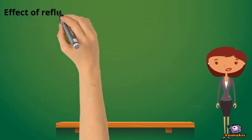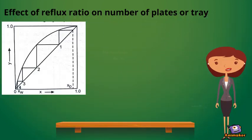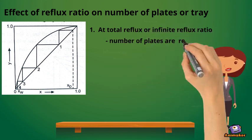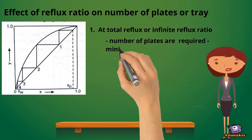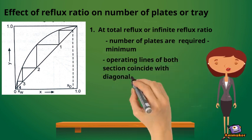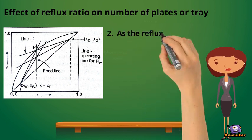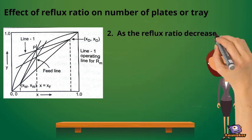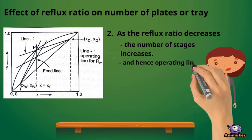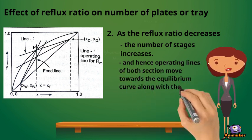The effect of reflux ratio on the number of plates or trays: at total reflux or infinite reflux ratio, the minimum number of plates are required, and the operating lines of both sections coincide with the diagonal. As the reflux ratio decreases, the number of stages increases, and the operating lines of both sections move towards the equilibrium curve along with the feed line.